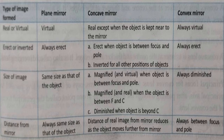Second property: erect or inverted. In a plane mirror, the image is always erect. In a concave mirror, it is erect when the object is between focus and pole, and inverted for all other positions of the object.